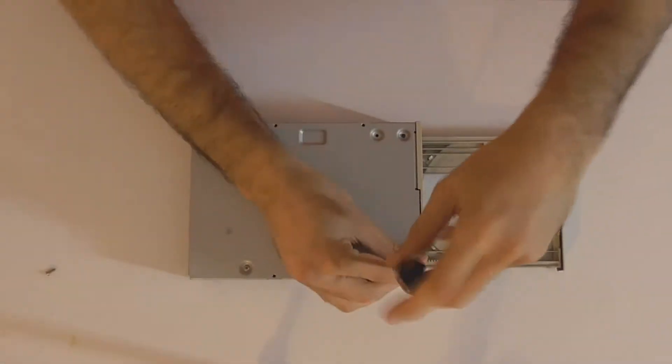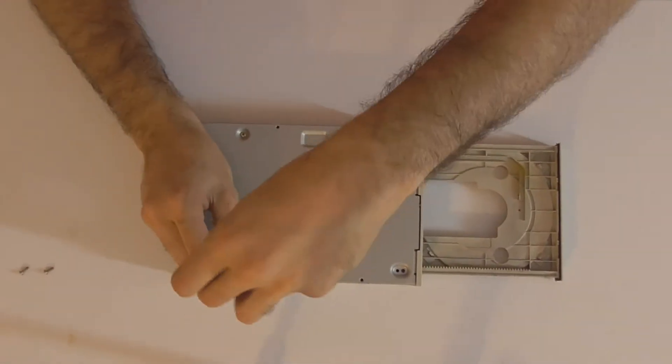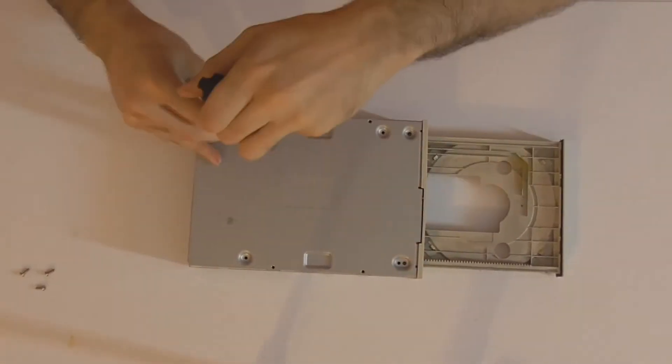Take a screwdriver and unscrew every single screw you can see from the outside of the device. Be sure to look under stickers and labels as they may often hide a screw.